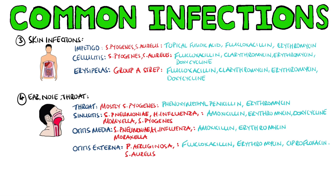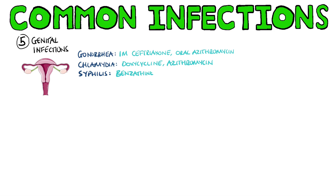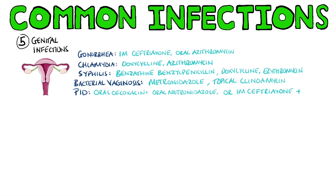For genital infections, gonorrhea is treated with intramuscular ceftriaxone and oral azithromycin. Chlamydia is treated with doxycycline or azithromycin, while syphilis requires benzathine benzylpenicillin, or doxycycline or erythromycin as alternatives. Bacterial vaginosis is treated with oral or topical metronidazole or topical clindamycin. Pelvic inflammatory disease can be treated with oral ofloxacin plus oral metronidazole, or intramuscular ceftriaxone plus oral doxycycline and oral metronidazole.